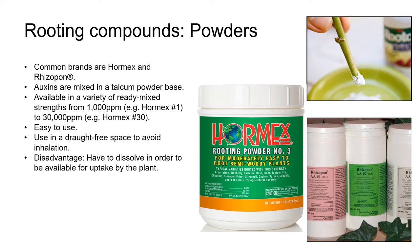Rooting compound powders have the auxins mixed into a talcum powder base. They come ready-mixed in a variety of strengths, from 1,000 parts per million for easy-to-root material to 30,000 parts per million for very hard-to-root material such as English yew and English holly. Powders are easy to use, but they can blow around, so make sure you're using them in a draft-free space so you don't inhale any of the powder or get it into your eyes. One disadvantage is that they're not in a form readily available to the plant — they have to dissolve first in water held in the substrate. If you work with a fairly dry substrate, you may find the powder doesn't dissolve well, and a liquid or gel rooting compound may be more effective.